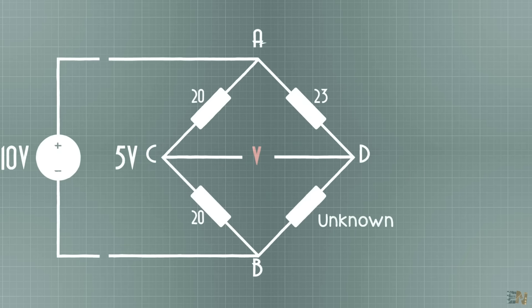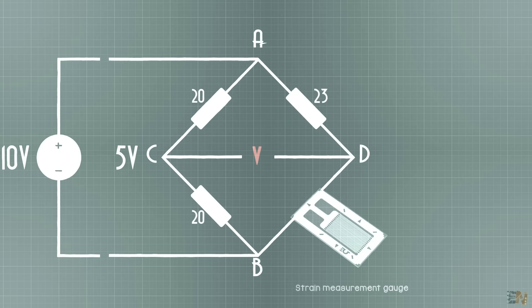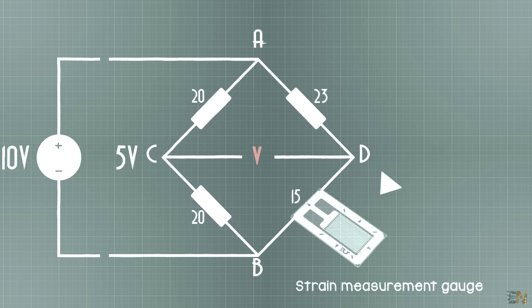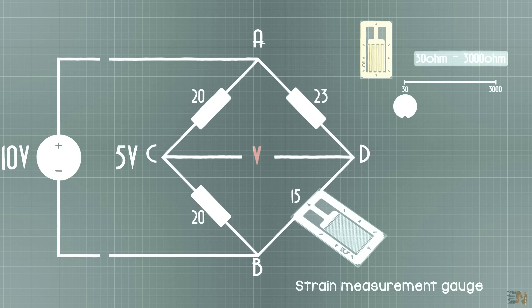OK, so now let's say that the unknown resistor is a strain measurement gauge. This gauge will increase the resistance under forces. In practice, the range of a strain gauge resistance is from 30 ohms up to 3000 ohms. For a given strain, the resistance change may only be a fraction of the full range. Therefore, to measure a fraction of resistance change with high accuracy, the Wheatstone bridge configuration is used.